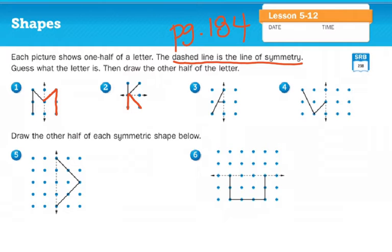Again, that dash line is the line of symmetry. What letter is letter A? Oh, whoops. What letter is number three? Sorry about that. It is the letter A. How about number four? What letter is that? It is W.